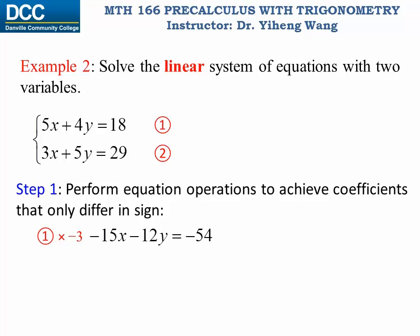For equation two I'm going to multiply it by positive 5. The entire equation is multiplied by 5, therefore it becomes positive 15x plus 25y equals 145.